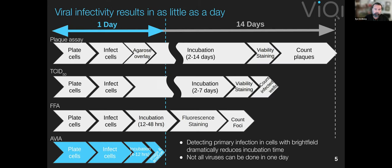Comparing to current assays used to measure infectivity: essentially all of them rely on a very long incubation period because the detection is of dead cells — as dead cells accumulate, you count that as a positive infection. In contrast, we're detecting individual infected cells before they die, so the incubation time is much shorter. Also, a lot of important viruses don't actually kill cells. A good example is HIV — it produces a latent infection where cells kick out virus at a certain rate. So compared to current assays, this would be a much faster turnaround time, letting you iterate faster over testing new drugs.